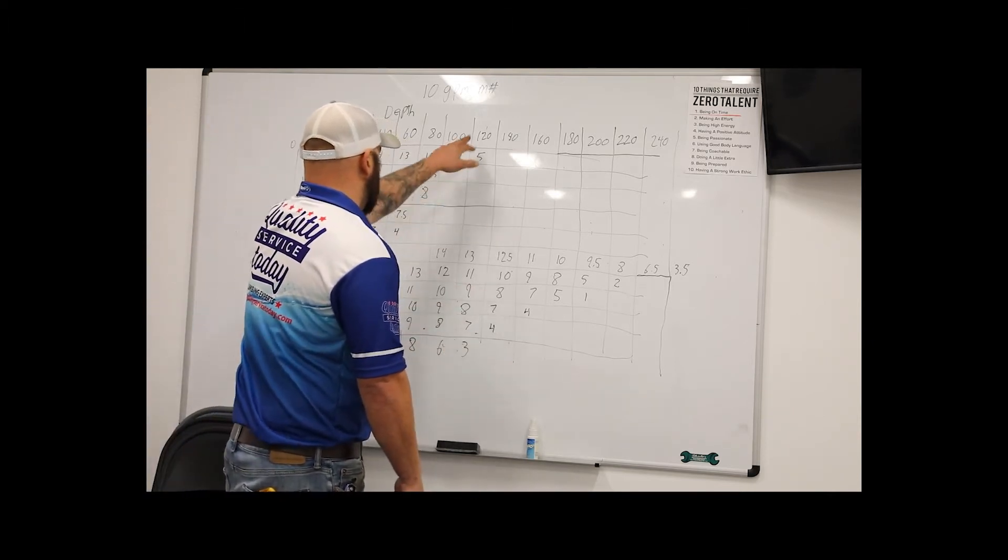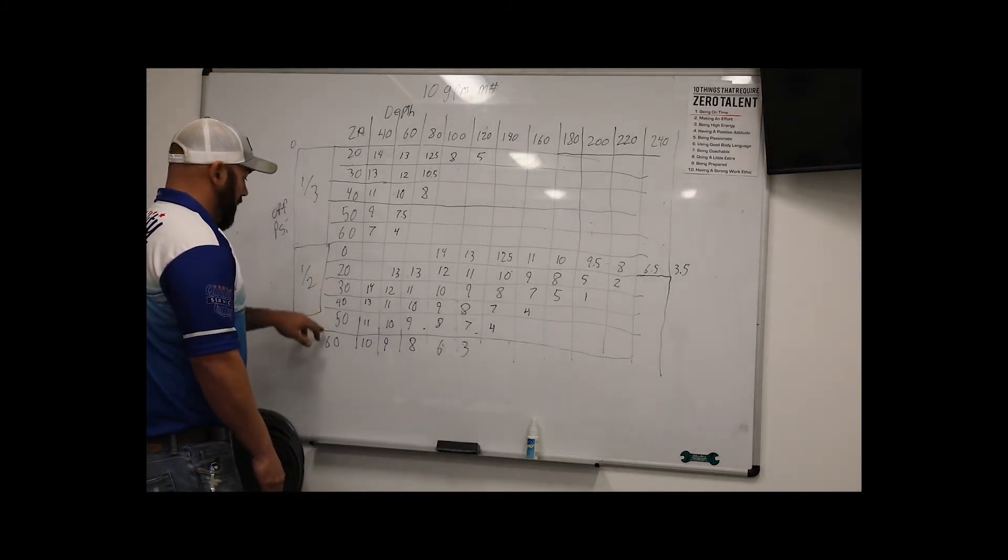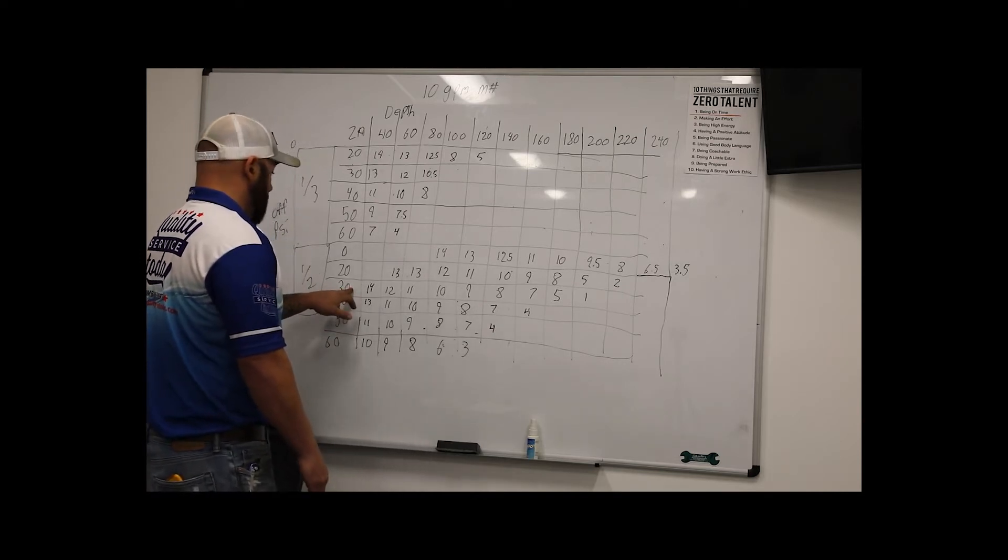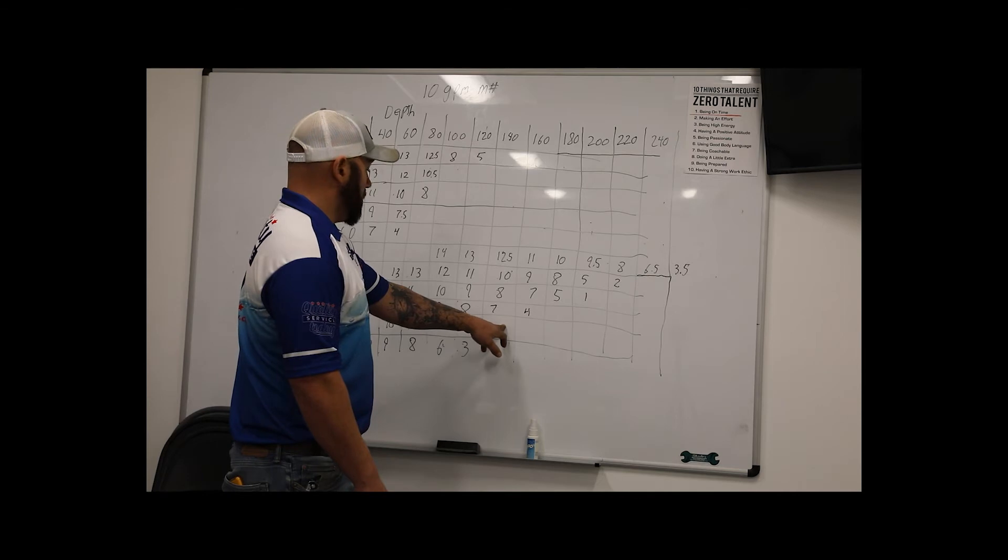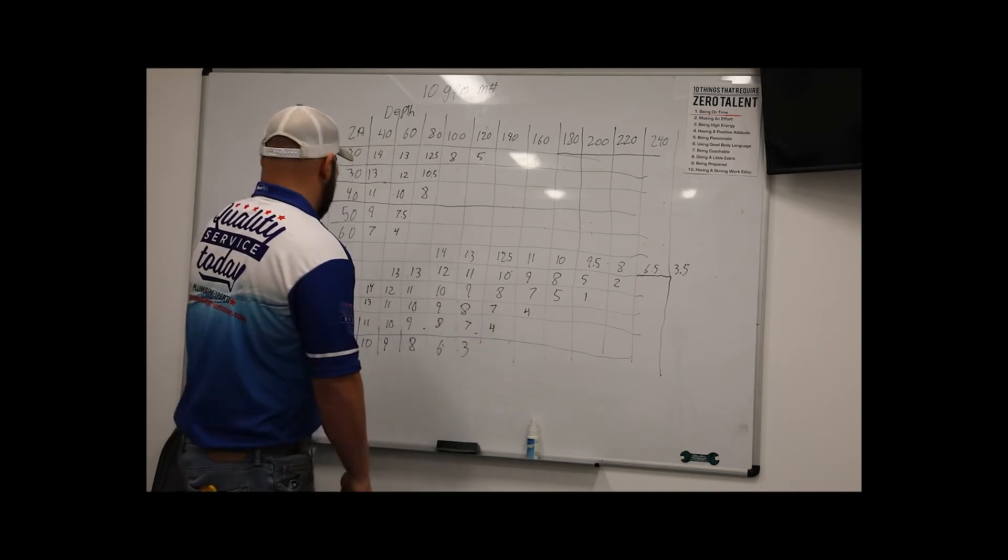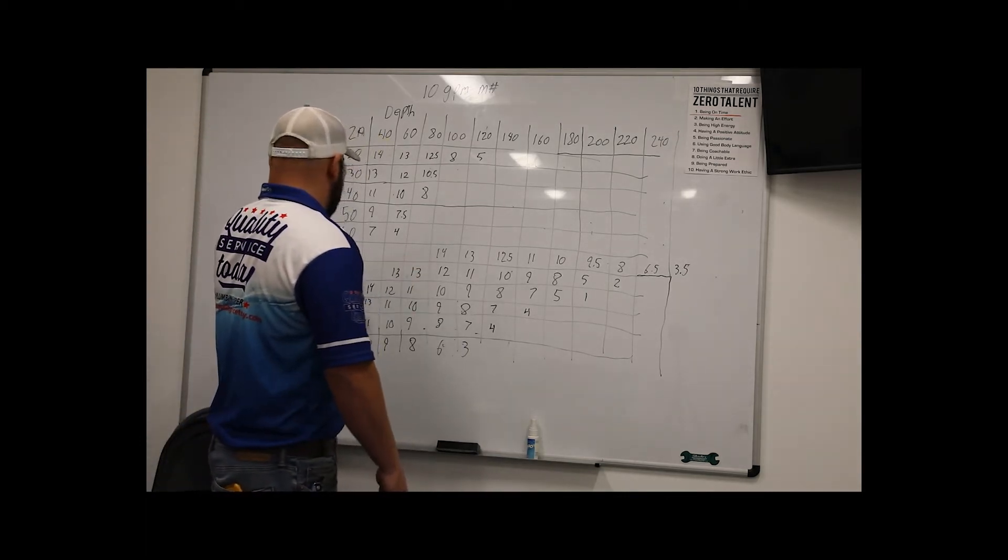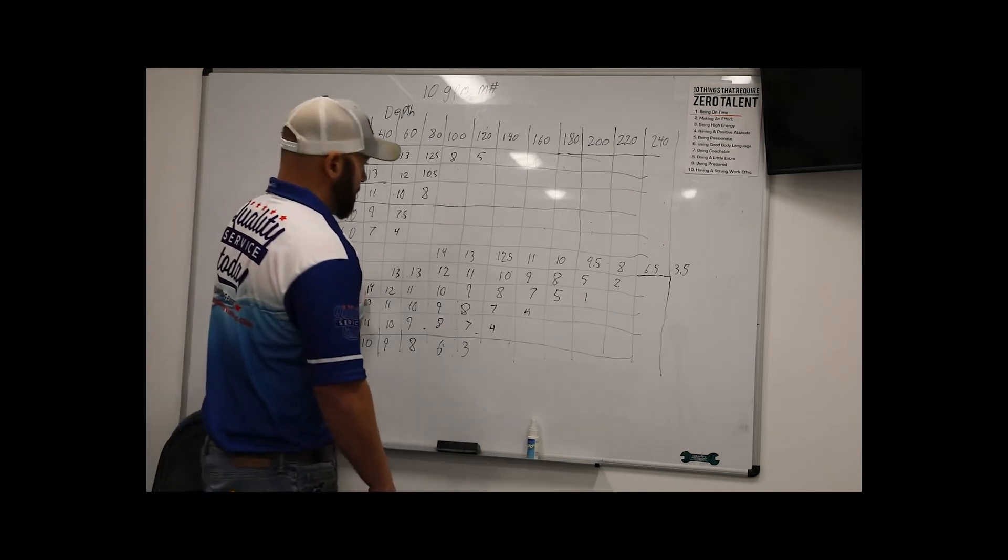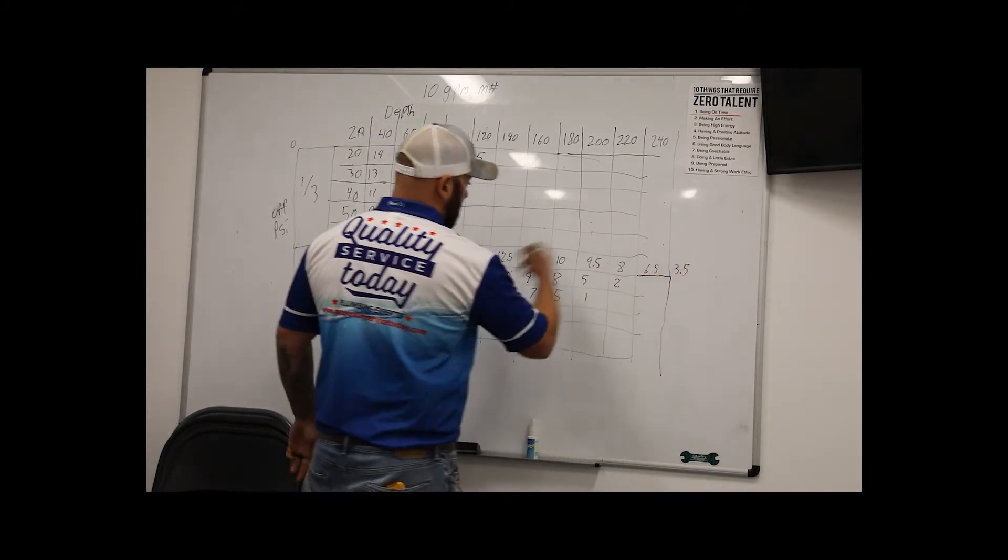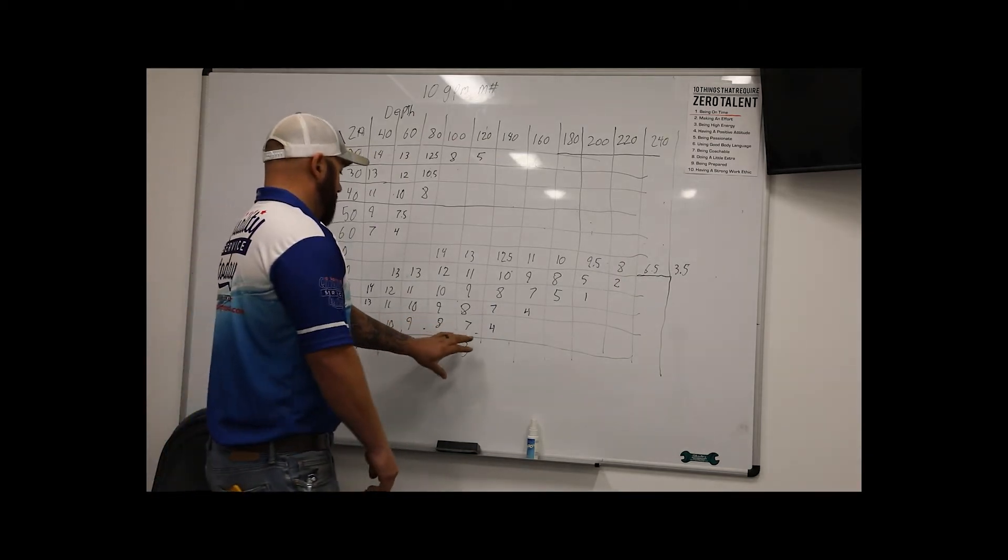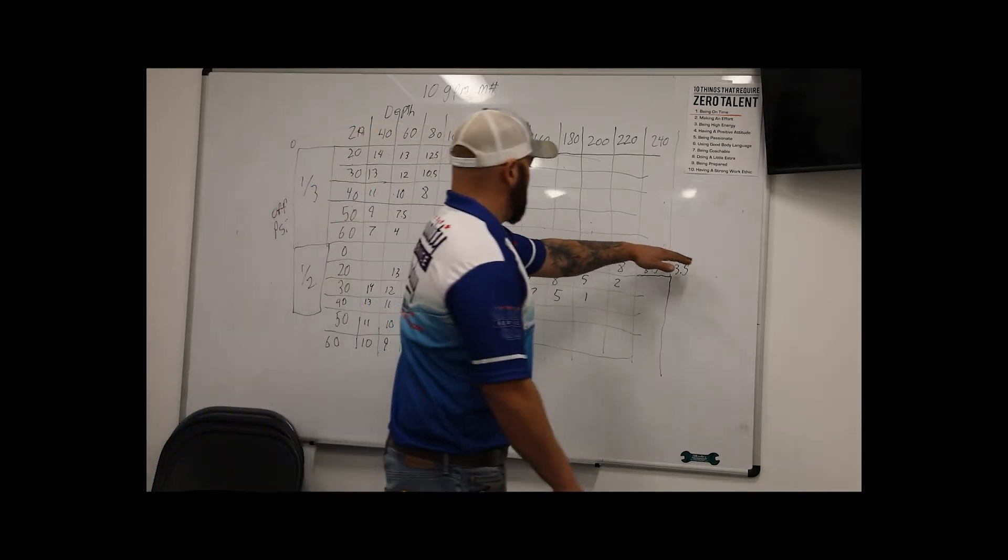So, 3 gallons a minute at 120 foot. Now, if we reduce our sum off pressure, typical switches are 30-50 and 40-60. On, off, on, off. If we reduce our pressure to a 30-50, we can move up from 120 to 140 foot at 4 gallons a minute. As you see, as this gets shallower, if we had an off pressure at 20, which you're not going to, I mean, but hypothetically, you could hang that at 260 foot deep at 3.5 gallons a minute. But that just goes to show how this increases. The shallower we go and the less pressure, we can hang it deeper.